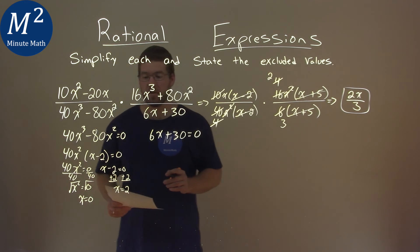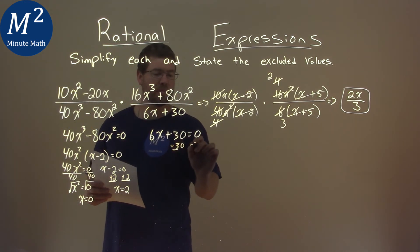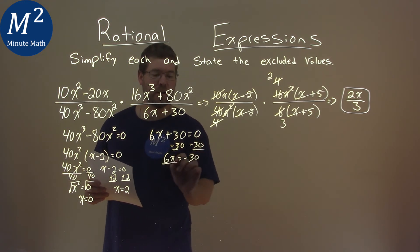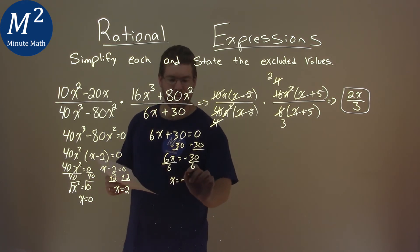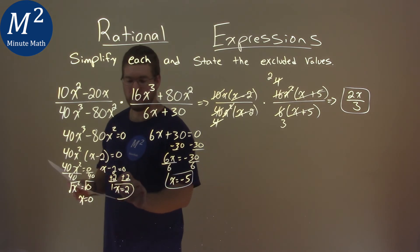This one now I also have to solve. So I'm going to subtract a 30 to both sides. We have 6x equals a negative 30, and I divide both sides by 6, and x equals a negative 5. So we have negative 5, positive 2, if I can circle that right, and a 0.